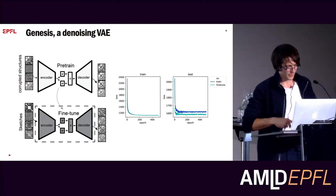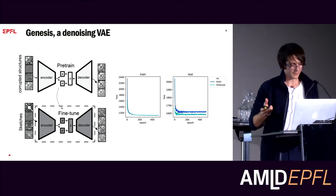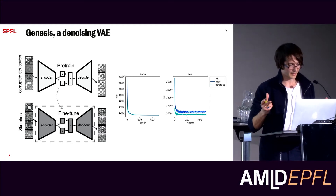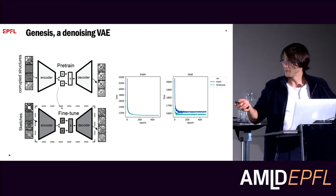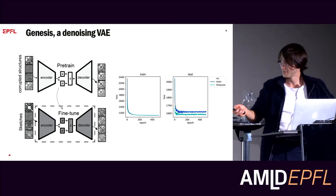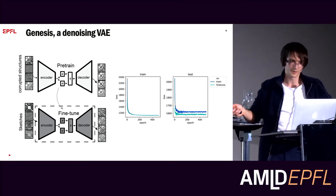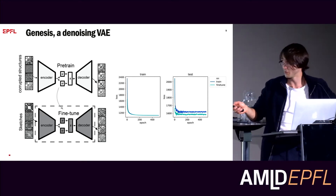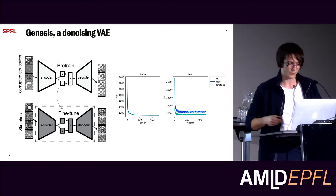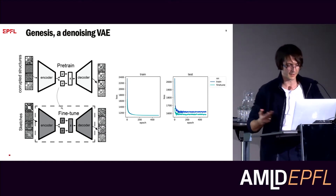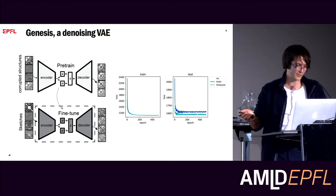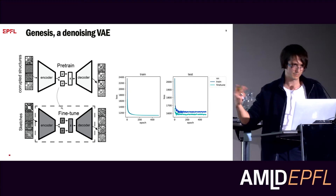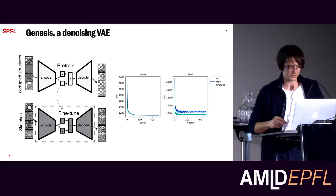We tried to operate directly on the sketch but couldn't. So we designed a denoising variational autoencoder where we input the sketches, encode them into a latent space, and decode denoised feature maps that should be very close to the native ones. We trained this in a supervised manner and saw that pre-training this denoising VAE on corrupted protein structures helps a bit.